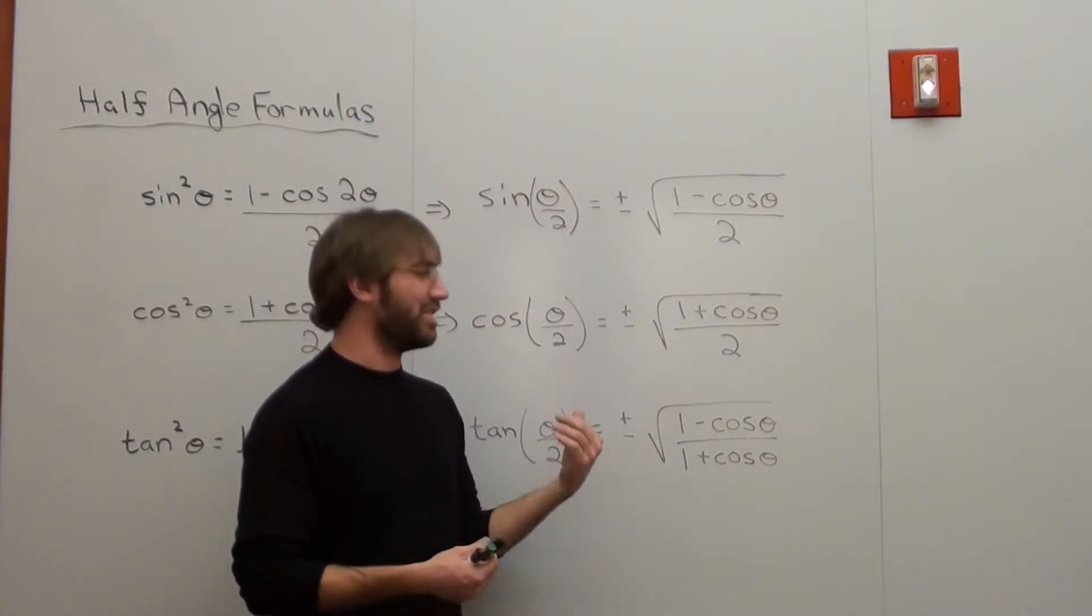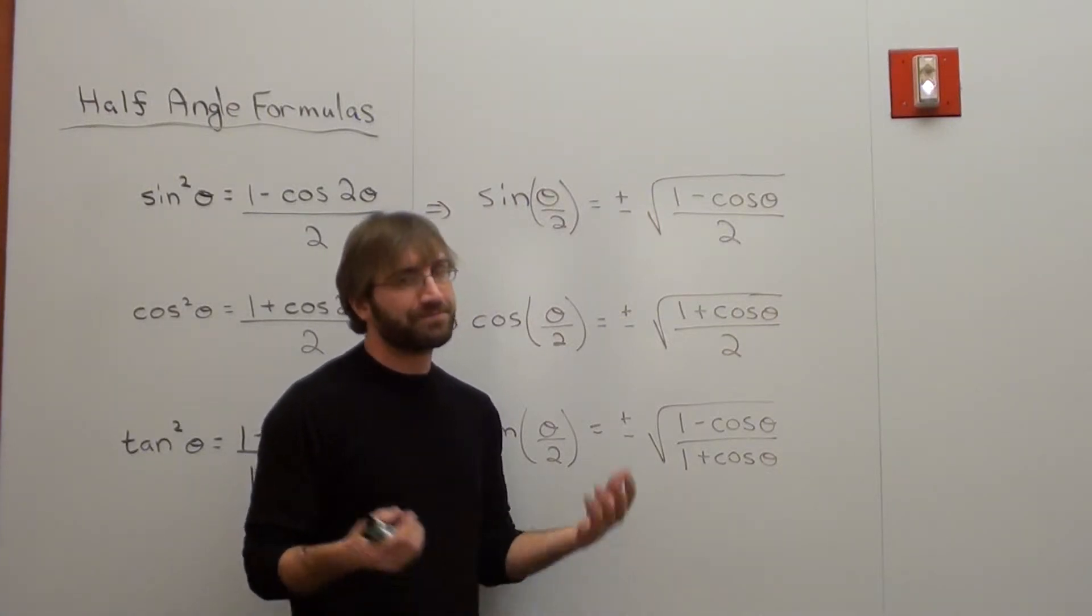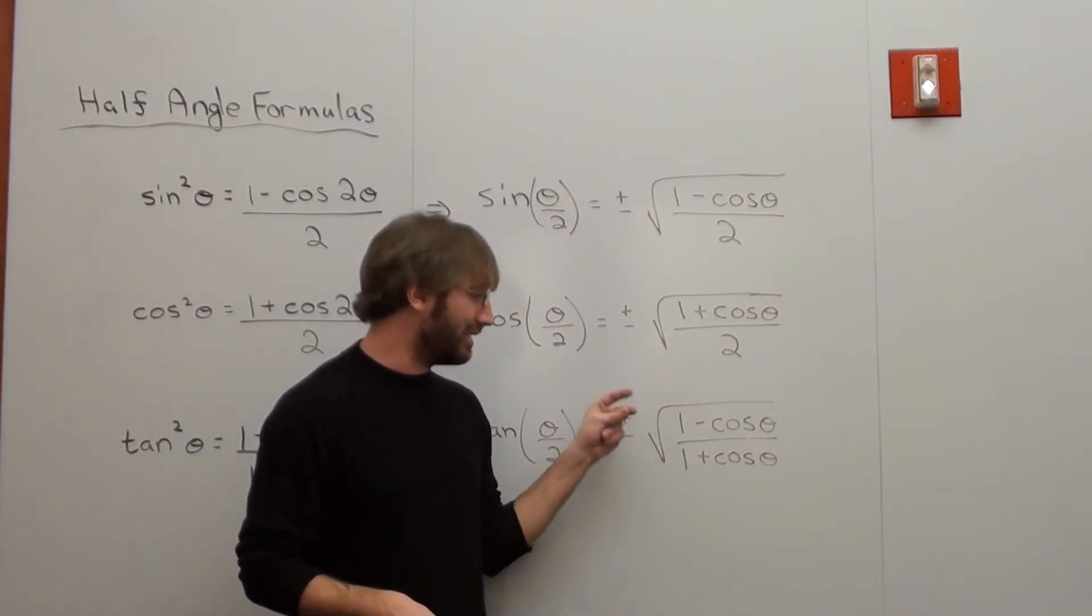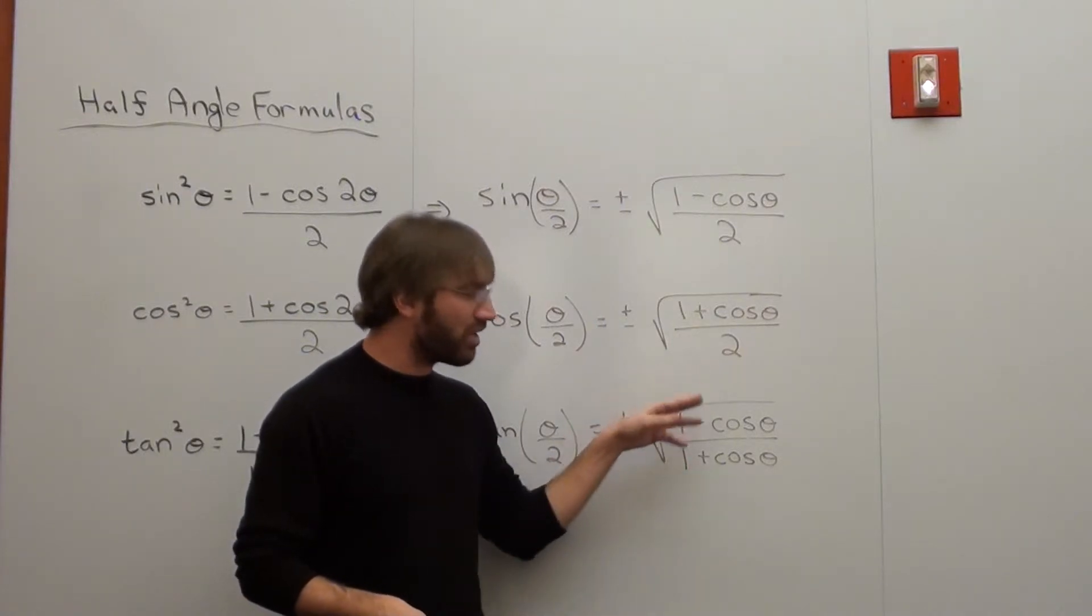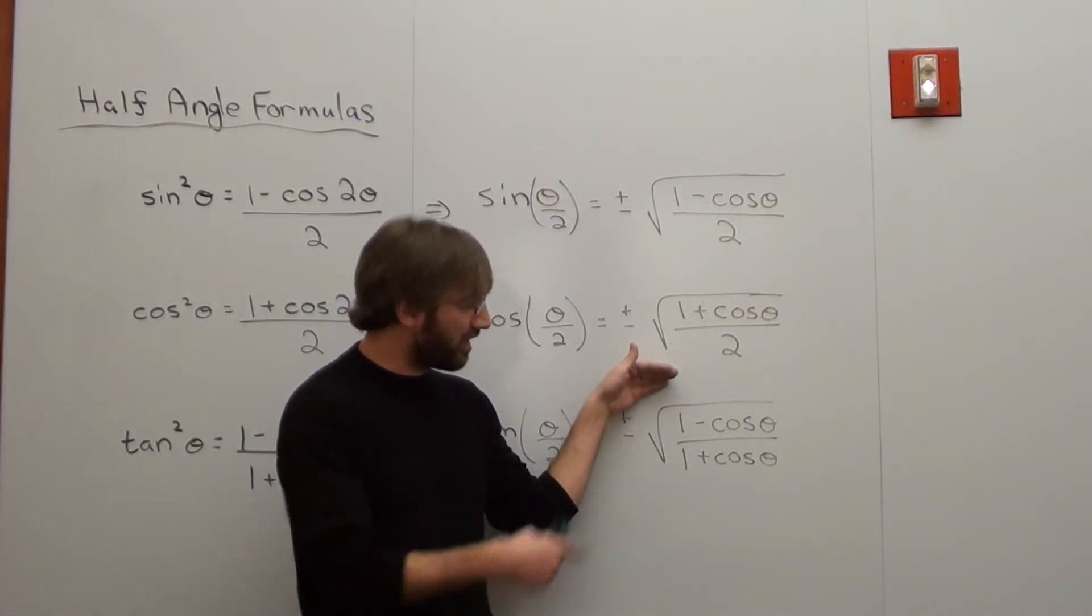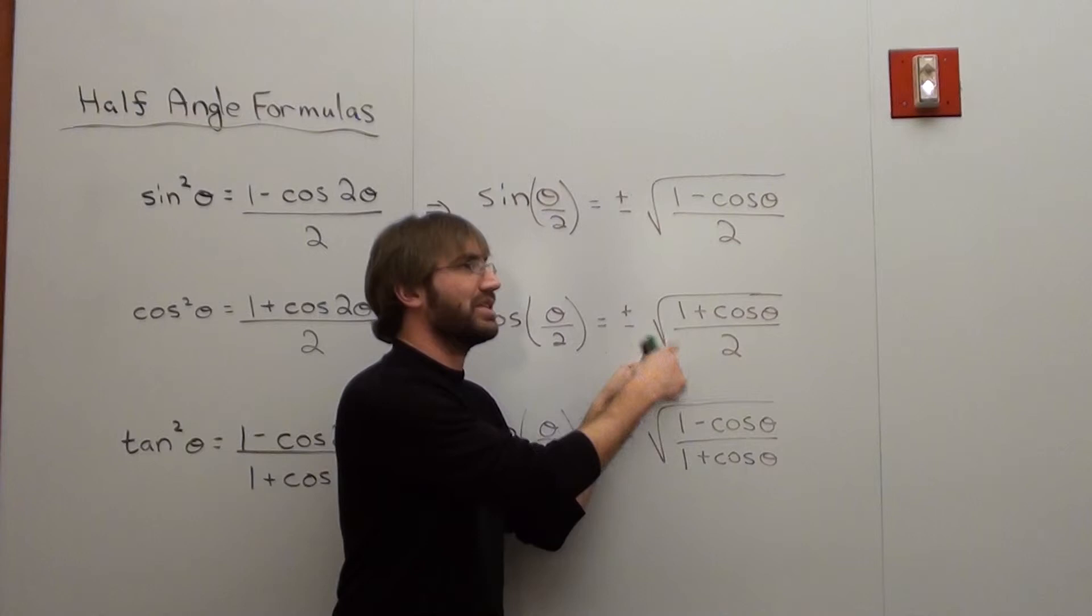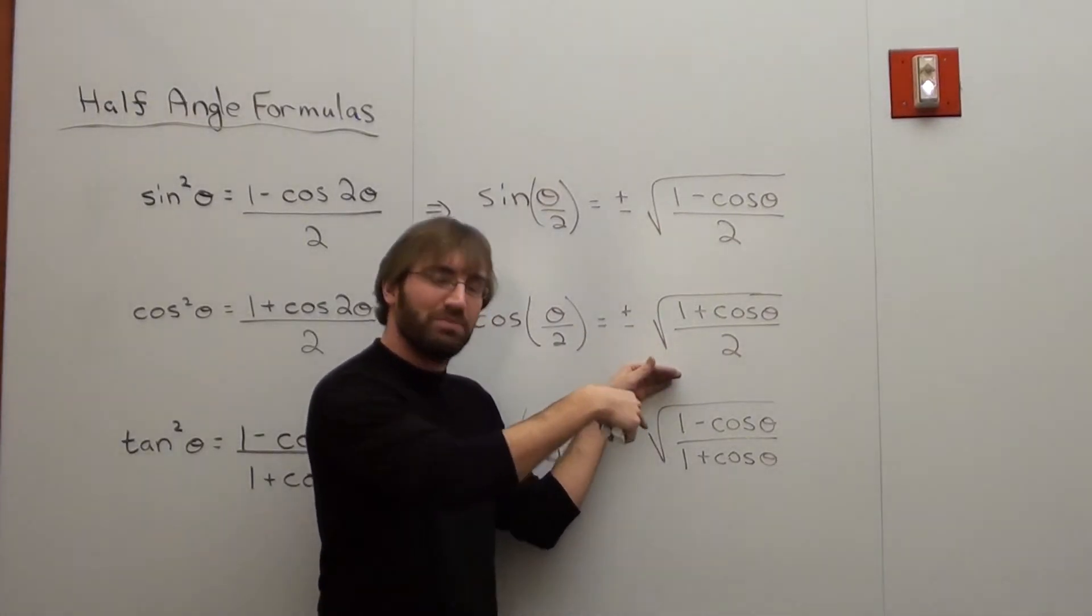I believe one of them is, without the square root, it would be (1 - cos θ)/sin θ, and the other one is sin θ/(1 + cos θ). It makes sense to me.